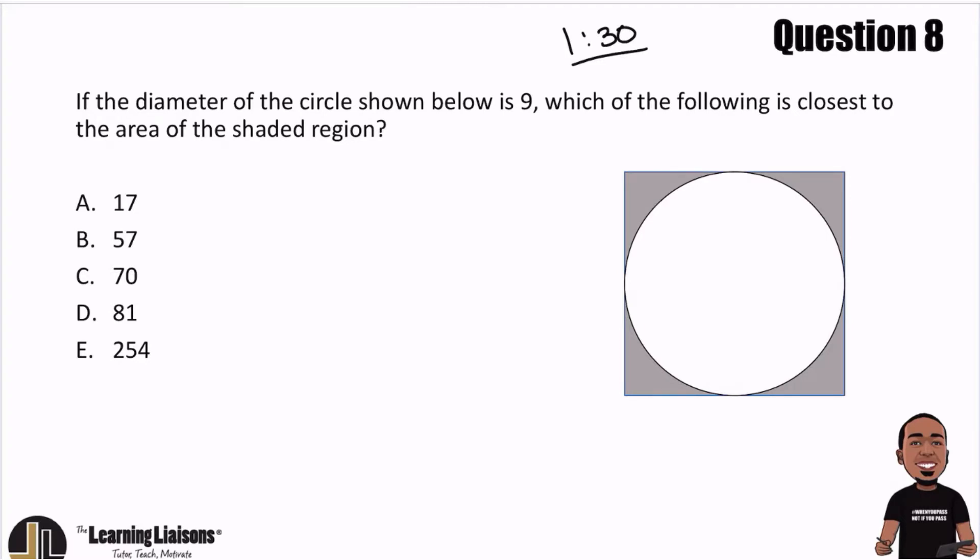So if the diameter of the circle shown below is 9, which of the following is closest to the area of the shaded region?